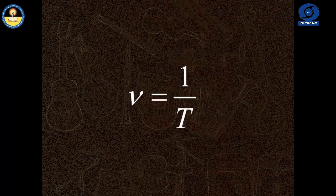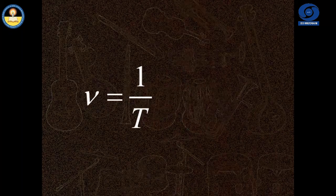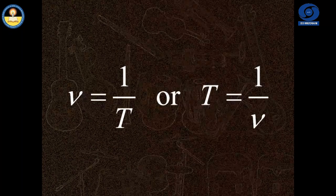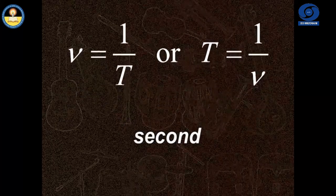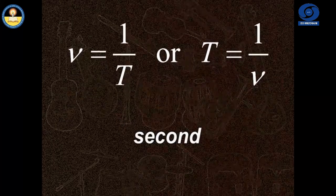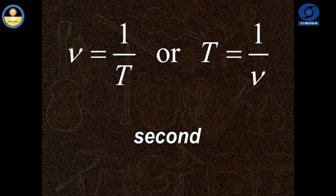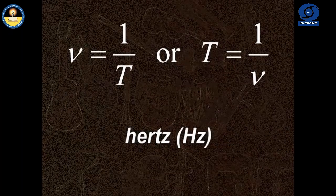Frequency of a wave is related to the time period of the wave as both are reciprocal of each other. Since the SI unit of time period is second, hence the frequency can also be measured as per second, which is also called hertz.